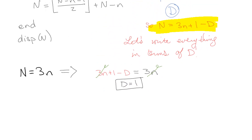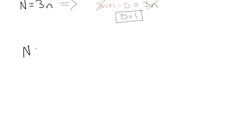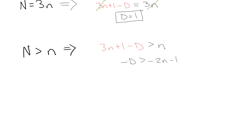Next we look at the while condition: while n is greater than n. We're going to substitute 3n + 1 - D in place of n, so we get: 3n + 1 - D is greater than n. Since little n isn't changing values throughout the while loop, we can move it over and get: negative D is greater than negative 2n - 1. Multiplying through by negative 1 flips the inequality, giving D is less than 2n + 1. Since everything is an integer, that's equivalent to D less than or equal to 2n.